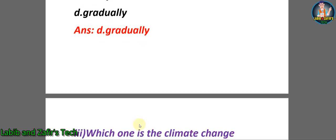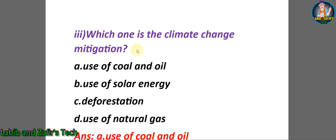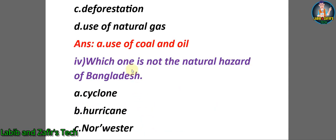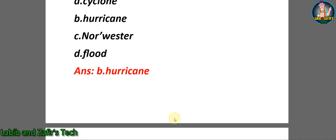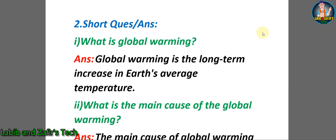Number three: which one is the climate change mitigation? A) Use of coal and oil, B) Use of solar energy, C) Deforestation, D) Use of natural gas. The correct answer will be B) Use of solar energy. Number four: which one is not a natural hazard of Bangladesh? A) Cyclone, B) Hurricane, C) Northwestern deep flood. The correct answer will be B) Hurricane.